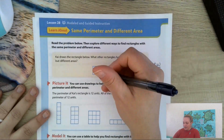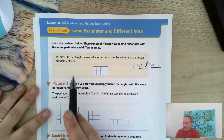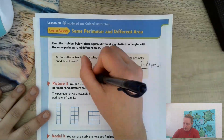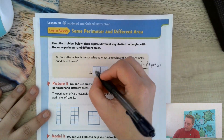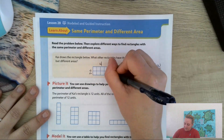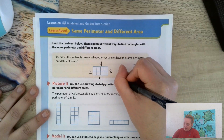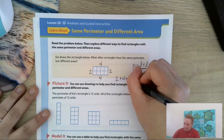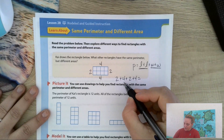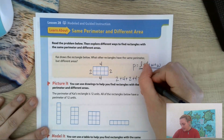Let's take a look. It says Chi drew a rectangle below. What are other rectangles that have the same perimeter but different areas? What is the perimeter? Well, it's two units here — that's the width — and four units here, two units here, four units here. So two plus four plus two plus four equals — two plus four is six, and I'm doubling that — so that would be 12.